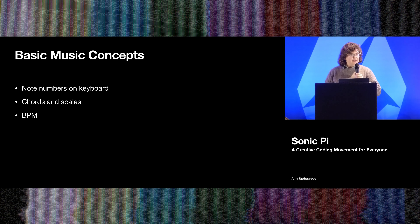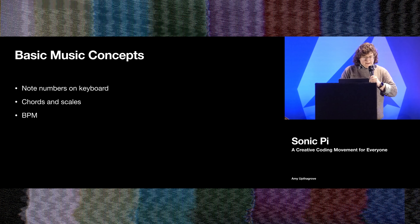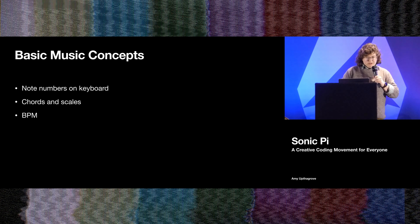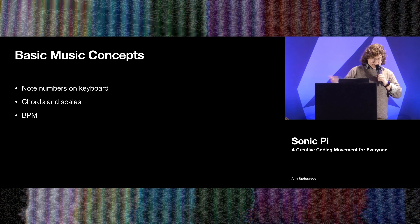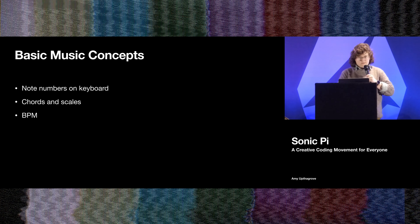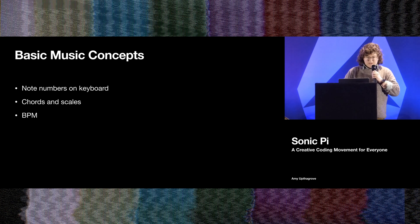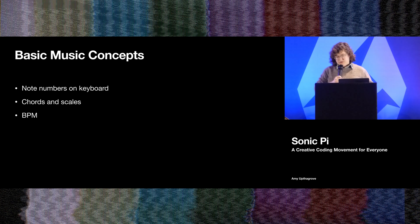There are a ton of samples that have been loaded into the program that you can call on from a library stored in the program — that's where you get the beat making functionality. Here's a sample of a basic backbeat using a bass drum sound. You basically just say 'sample' and it gives you a list of all the different samples you can choose from. Obviously just playing it like that is cool, but you can't really do much with it, which is where the more interesting code features come into play.